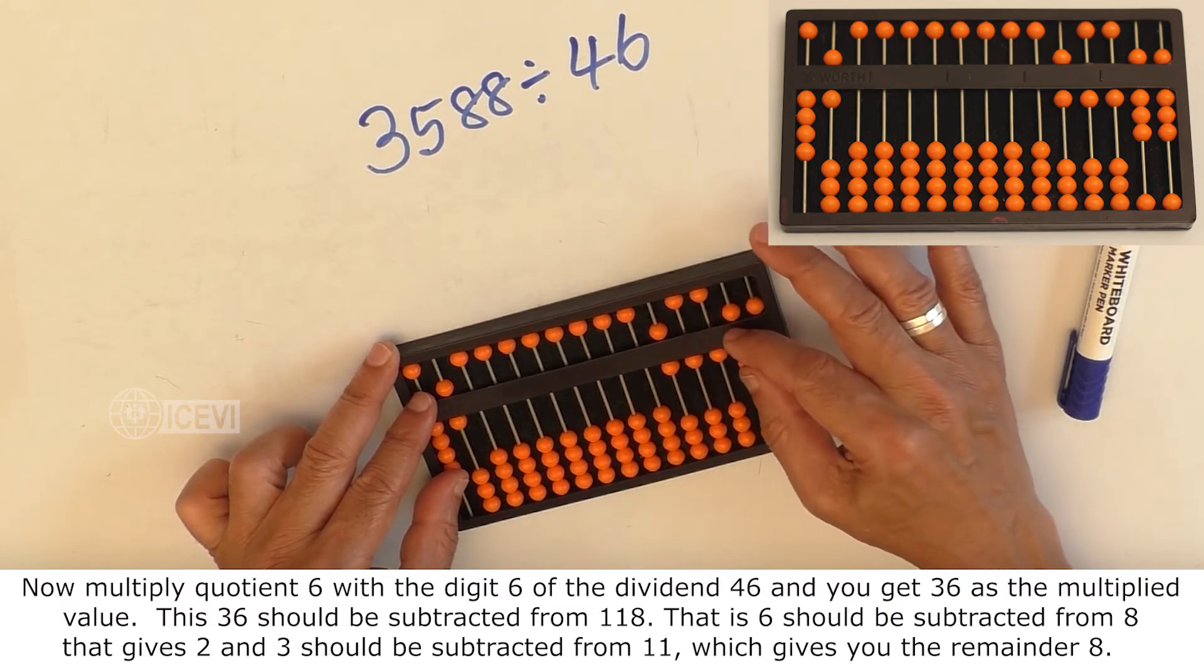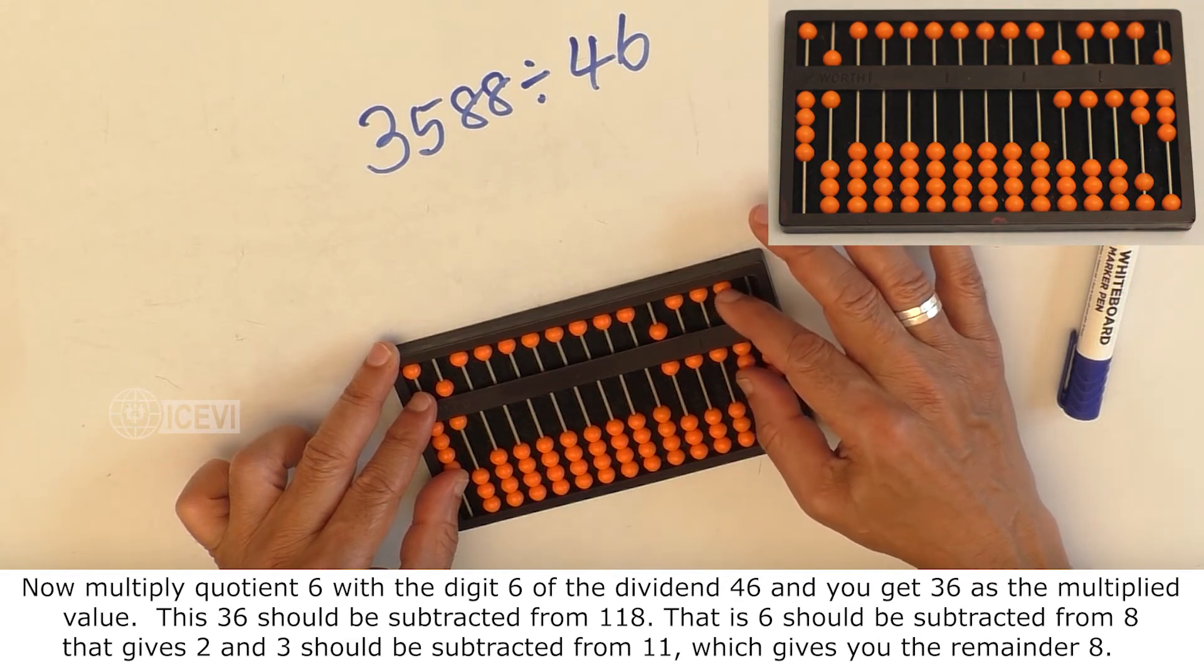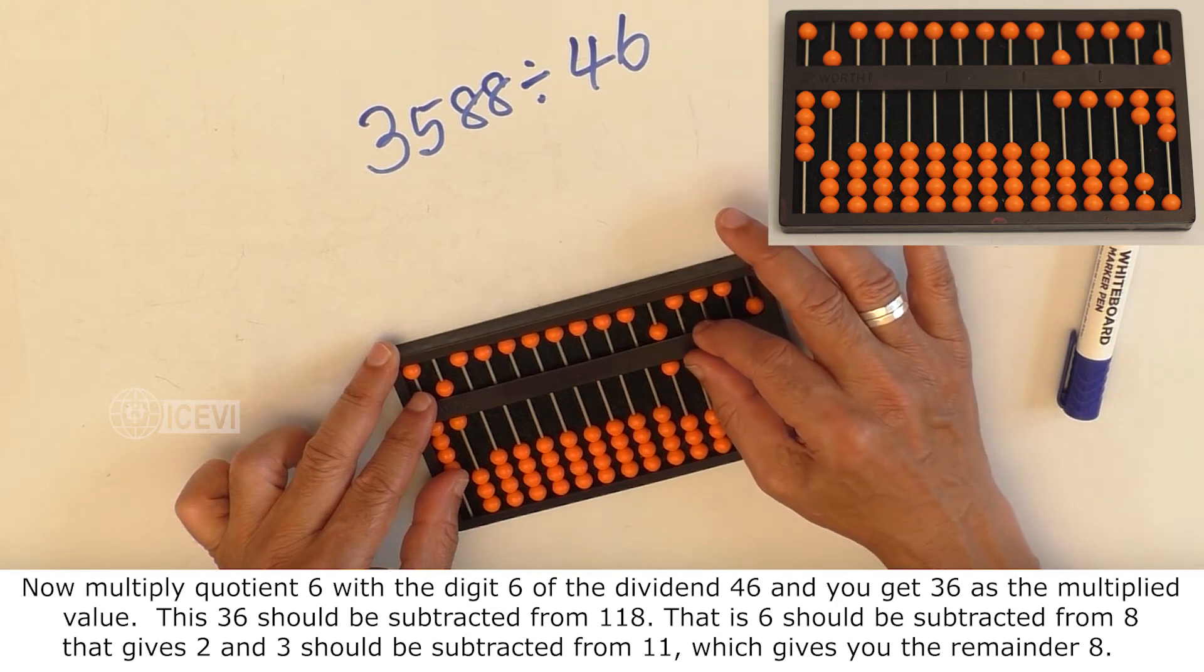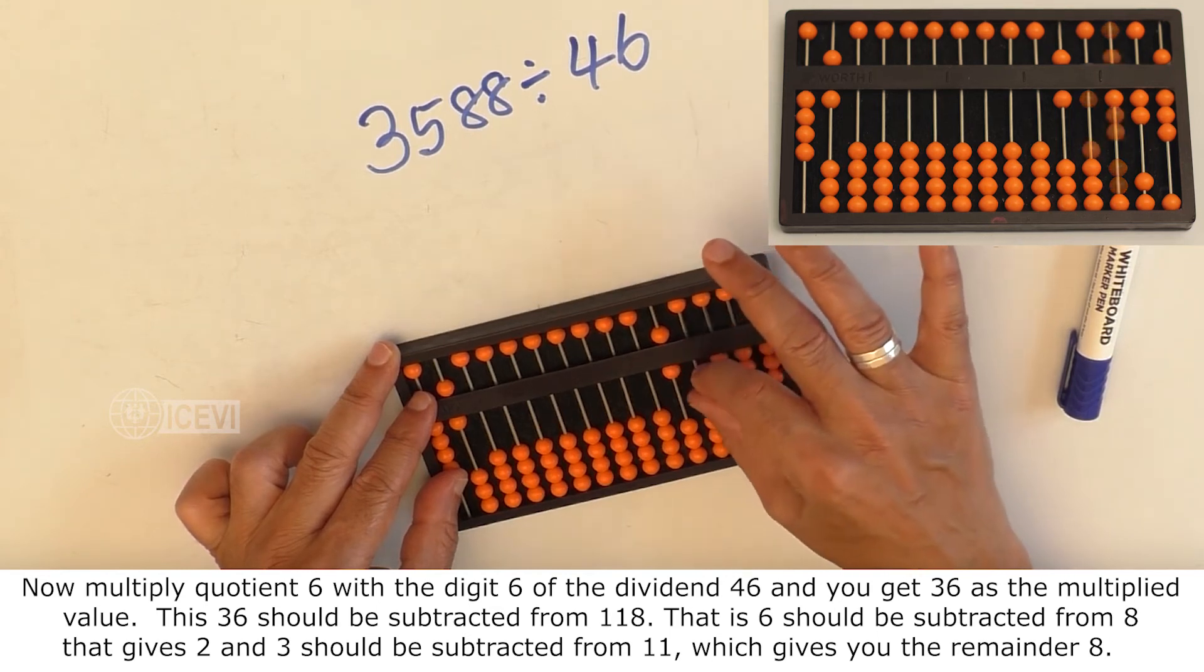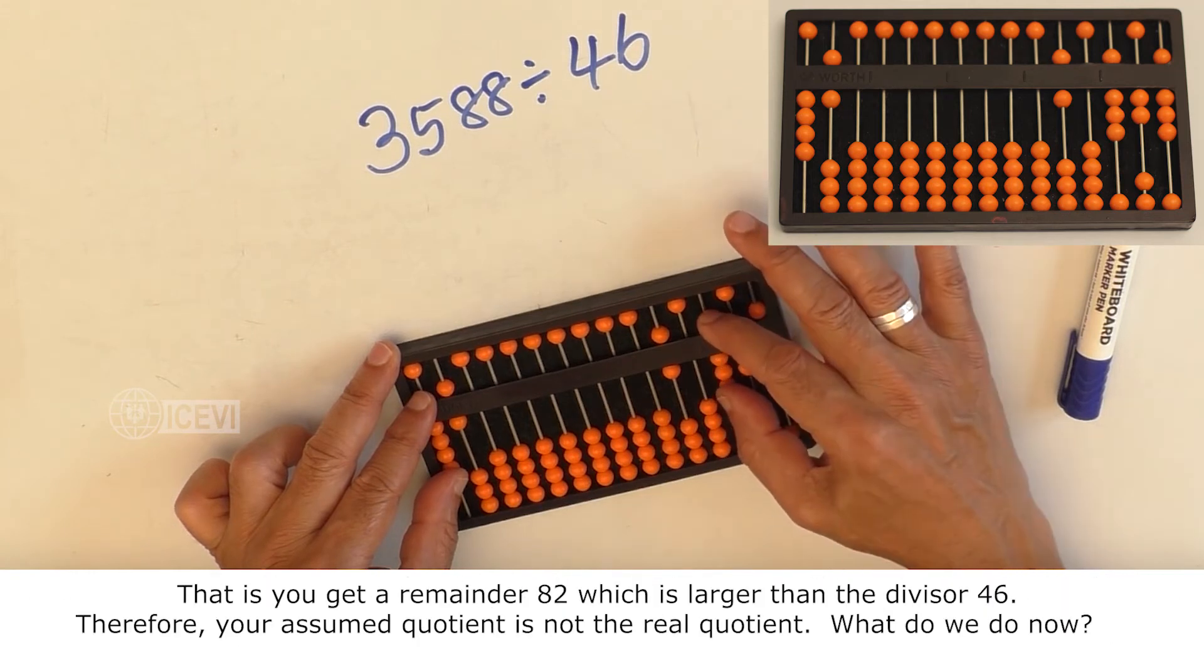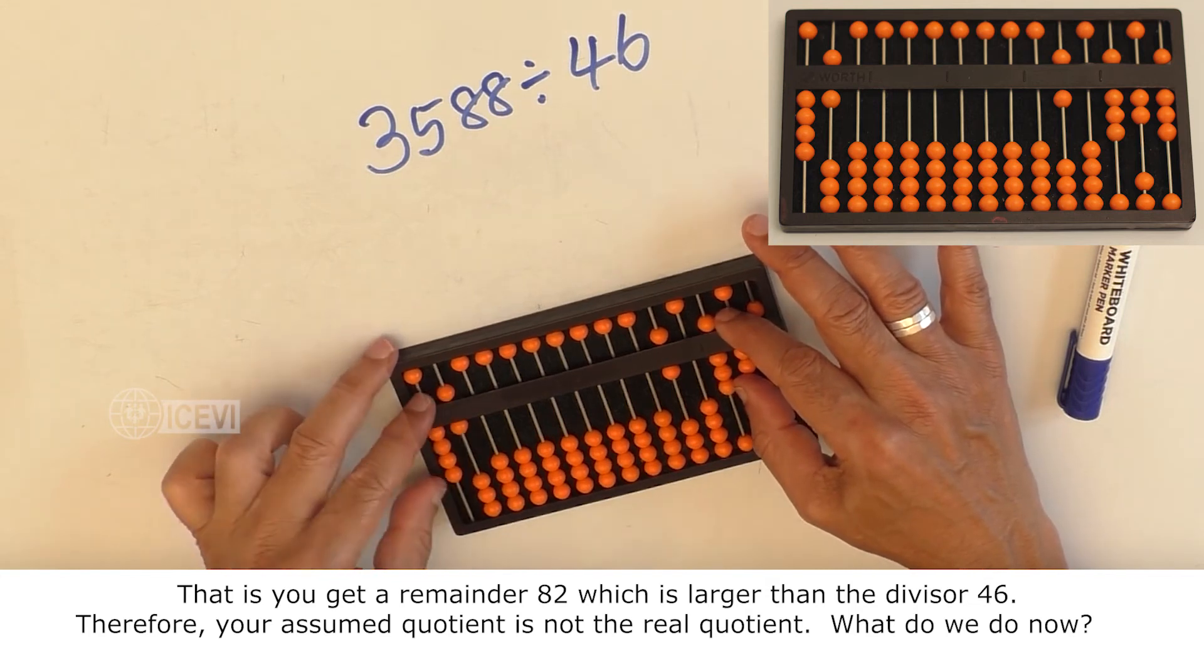That is, 6 subtracted from 8, that gives 2, and 3 subtracted from 11, which will give you the remainder 8. That is, you get the remainder 82, which is larger than the divisor 46.